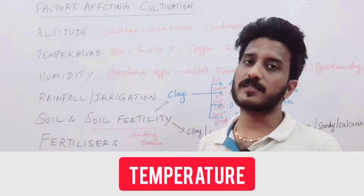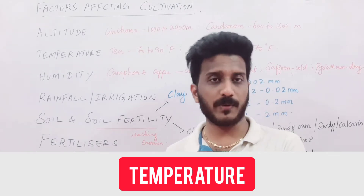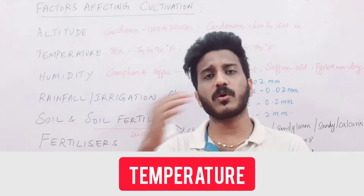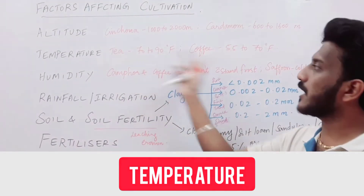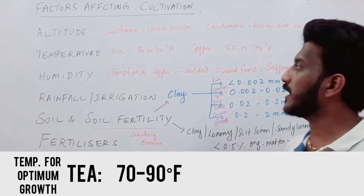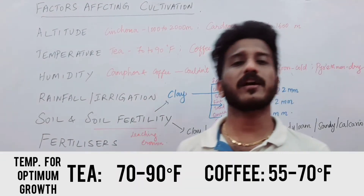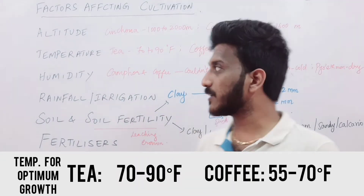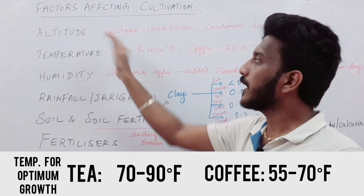Temperature also plays a role. Some plants grow in extremely hot temperatures, and some in extremely cold temperatures. For example, tea grows at 70 to 90 degrees Fahrenheit, while coffee grows at 55 to 70 degrees Fahrenheit. The same principle as altitude applies — the plant must be cultivated within its optimal temperature range.